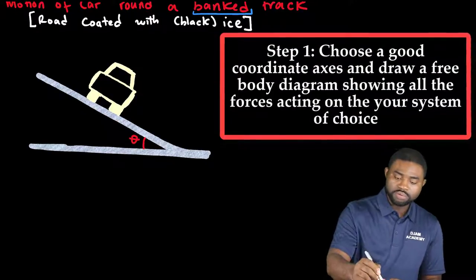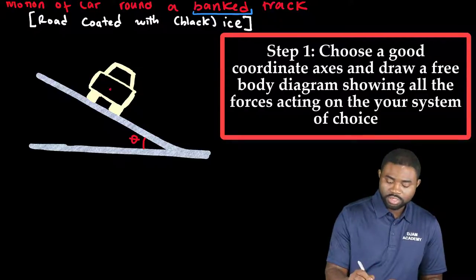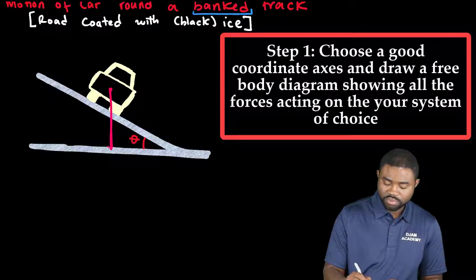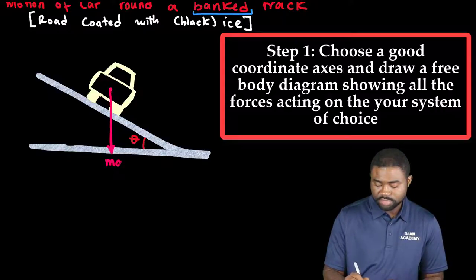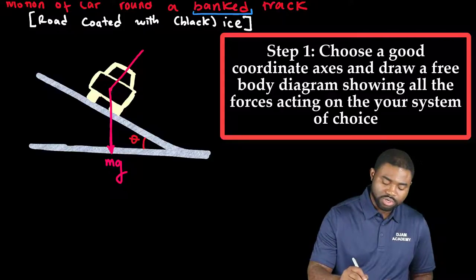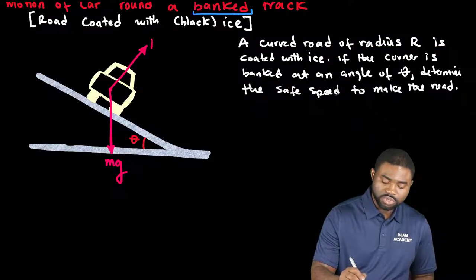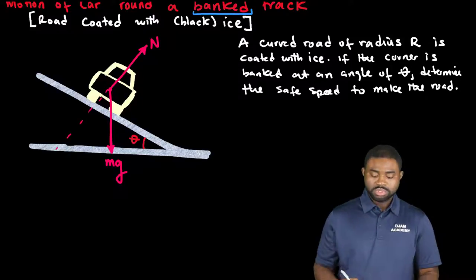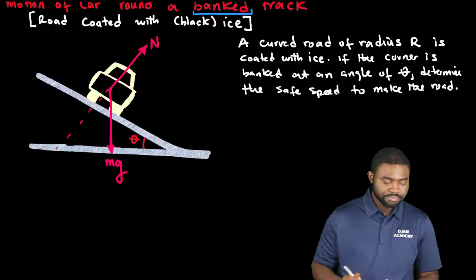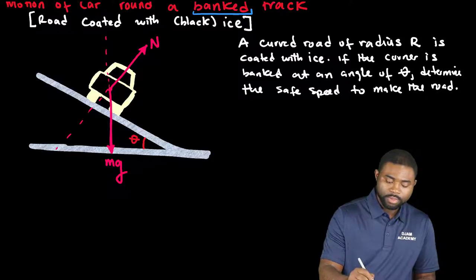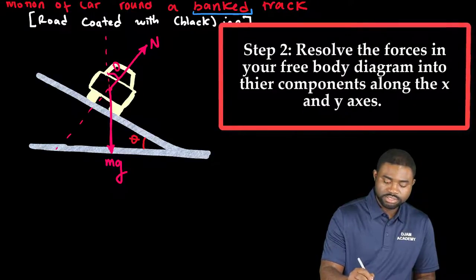Now, the weight of the car acts always vertically downwards. This is mg. There is a normal force acting on the car. That normal force is always perpendicular to the road. Remember, this angle is theta.